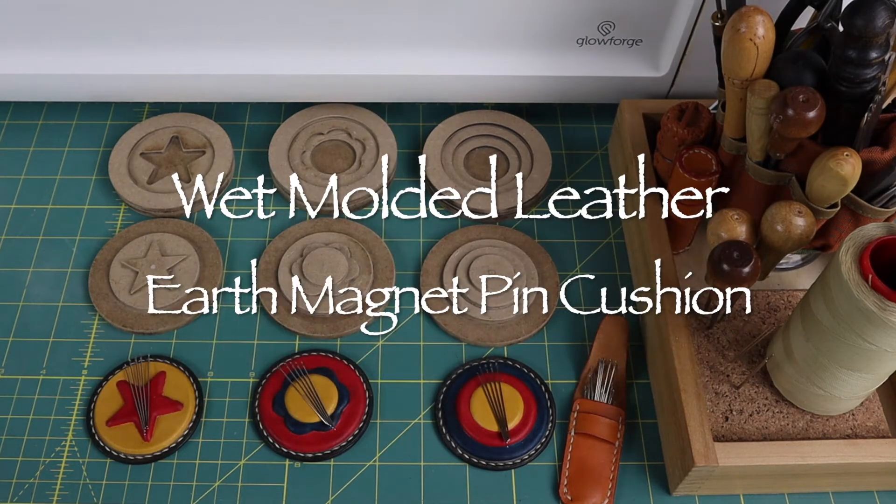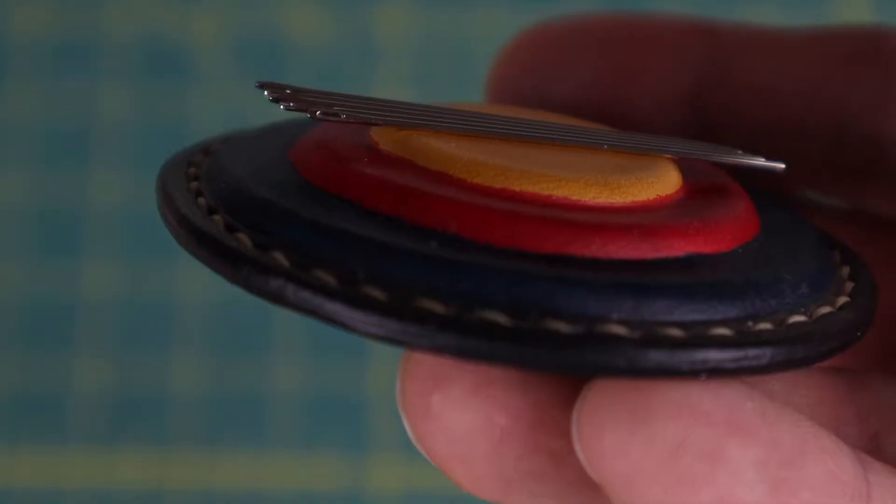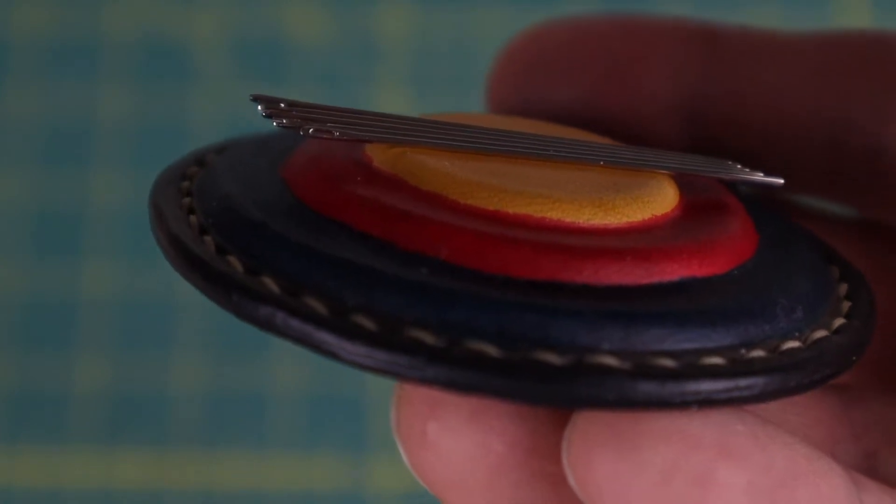Sewing needles are very small and can easily go missing, so small needle cases and pin cushions can be used to help keep track of them. Instead of a traditional pin cushion where you stick the points into cotton or cork, a small magnet can be used.